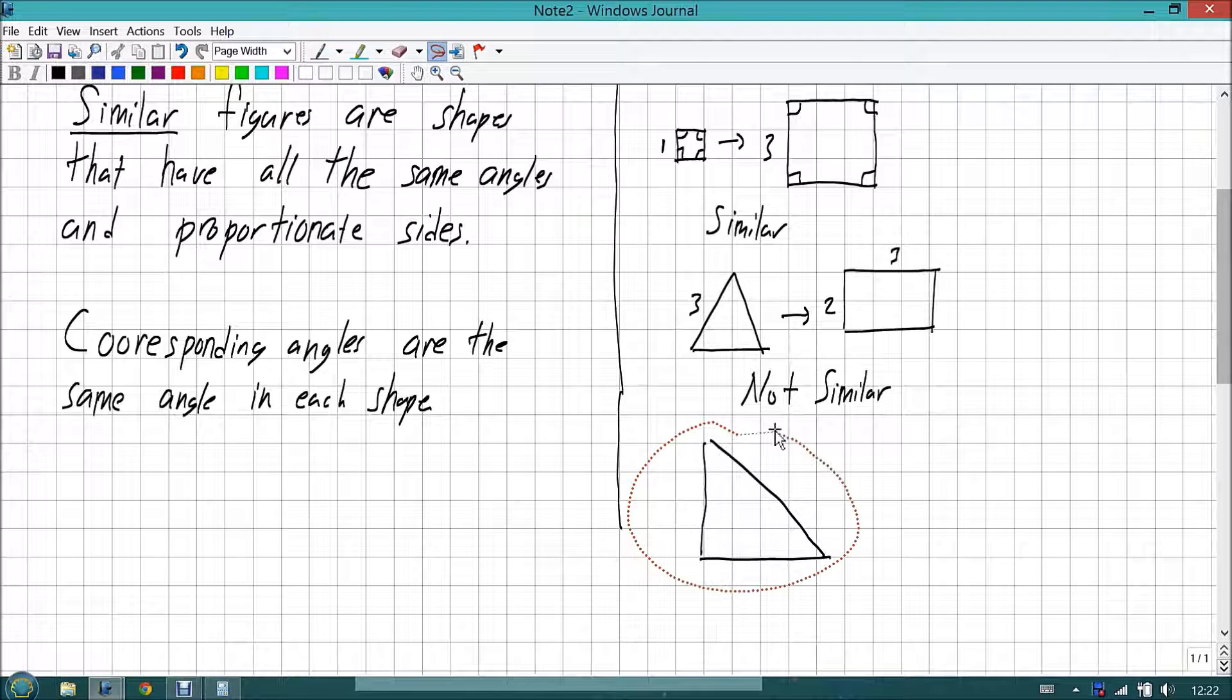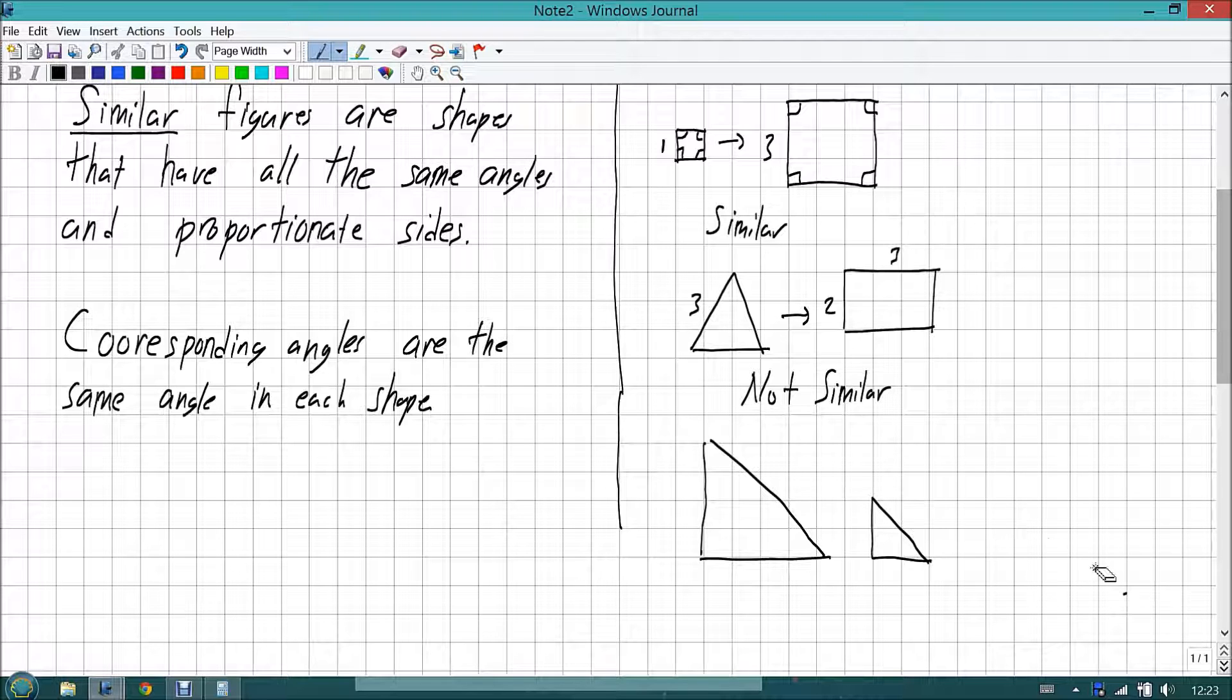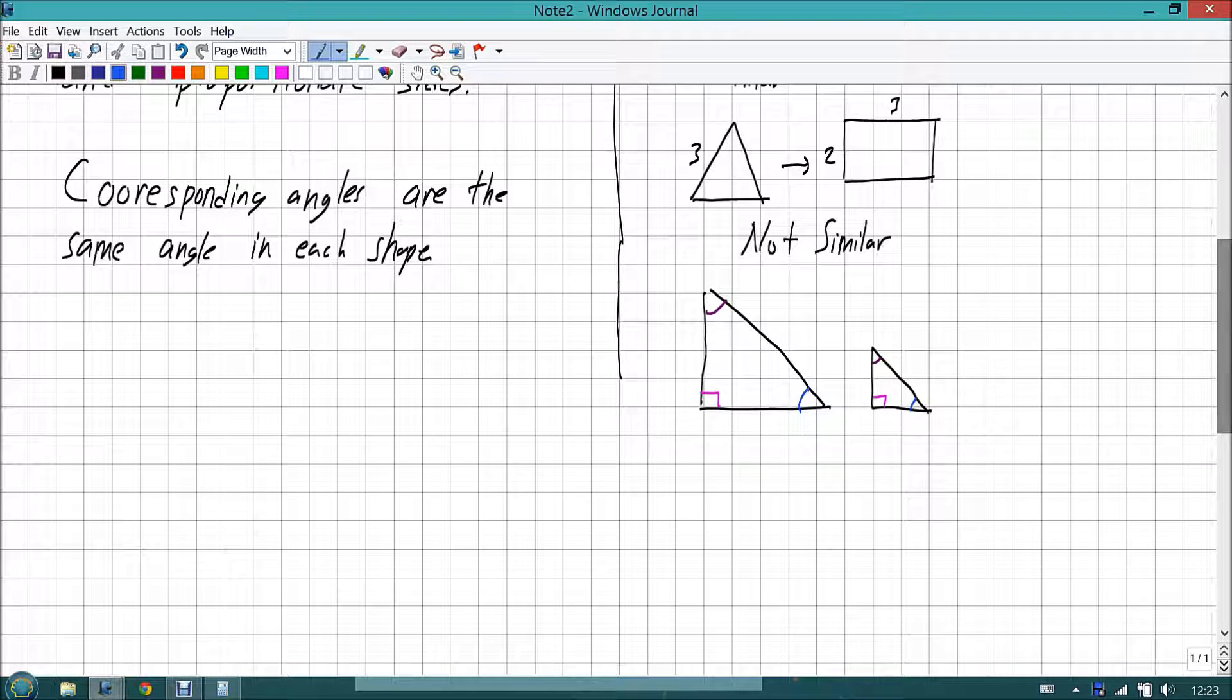Now, if I was to make a similar triangle next to it, I would say that the angles in pink are corresponding because they're the same. The angles in purple are corresponding because they're in the same location. And the angles in blue would be corresponding because they're also in the same location.